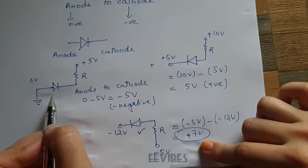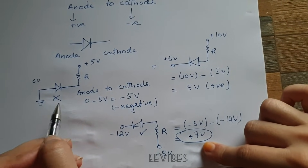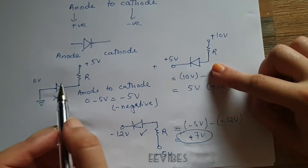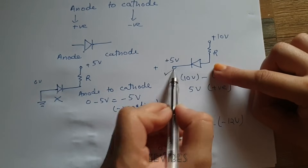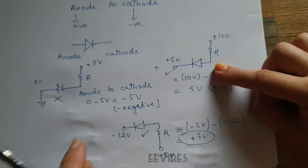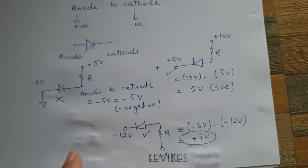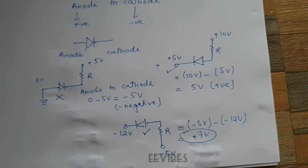Similarly, no conduction will take place in that case, and again the diode in this circuit will conduct. In the next part, I will explain what diode switching circuits are. Thank you for watching.